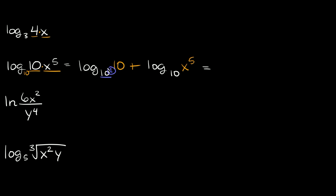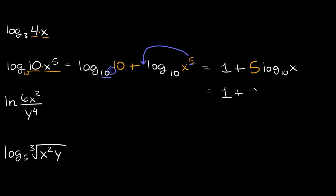If you need a reminder on how to solve logs, I'll link that video in the card above and description below. So we have 1 plus log base 10 of x to the 5th. There's an exponent here, so we can throw it out in front of the log. This simplifies to 5 times log base 10 of x. We can hide the base 10 just as it was originally, so this is equal to 1 plus 5 log of x.